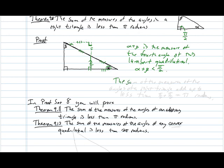of the angles of the right triangle add up to less than pi over 2 plus pi over 2, which is pi radians.